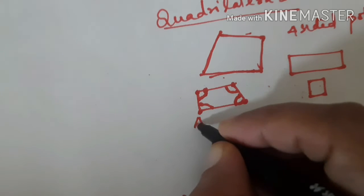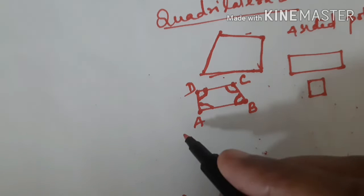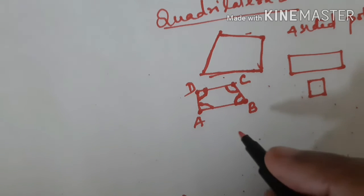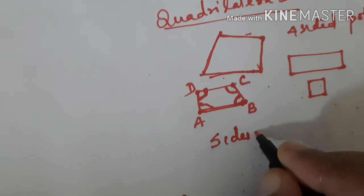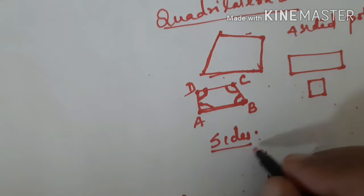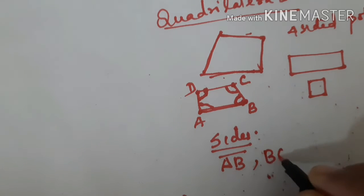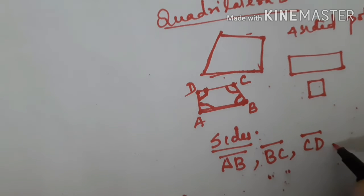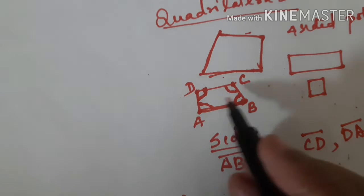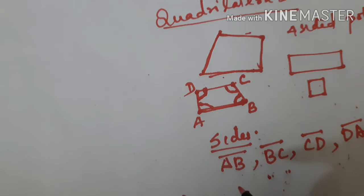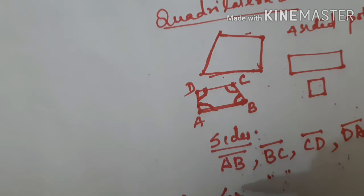I am going to name this quadrilateral ABCD. In quadrilateral ABCD, how many sides are there? There are four sides: line segment AB, then BC, CD, and DA. These are the four sides of the quadrilateral. There are four angles also.